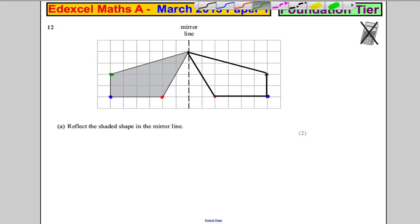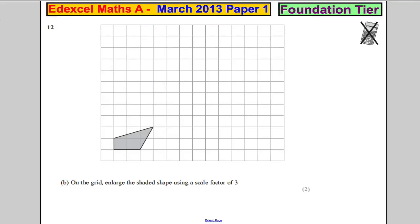Next question: On the grid, enlarge the shaded shape using a scale factor of three. Now the really nice thing about this question is you're not given a center of enlargement, you're just told to make that bigger by a scale factor of three - that means three times bigger.